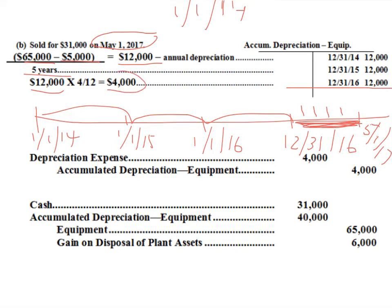I need to record four extra thousand dollars. The journal entry is: debit Depreciation Expense for $4,000 and credit Accumulated Depreciation for $4,000. With this update, you will end up with $40,000 of accumulated depreciation on your books. Now we're ready for the sale entry.